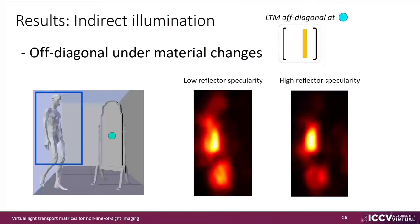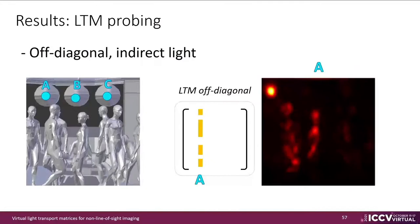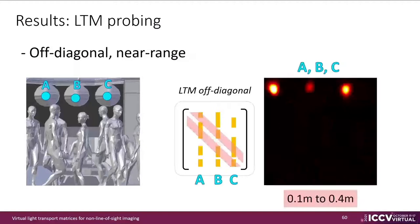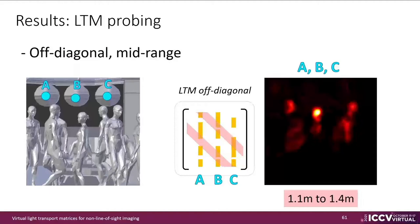When increasing the reflector's specularity, it concentrates the indirect light towards the torso of the mannequin. We also show how specific columns of the LTM reveal indirect light in a highly cluttered scenario, coming from the center of lamps A, B, and C separately in the ceiling of the room. Every column in the LTM corresponds to a different location on the lamps, and we can see how the profile of the indirect illumination changes as we move the illuminated point from one lamp to the other. By masking different distances from the LTM diagonal, we can isolate indirect light within specific path lengths when illuminating the three points simultaneously.